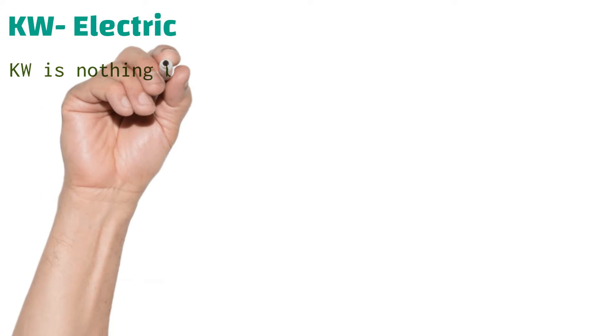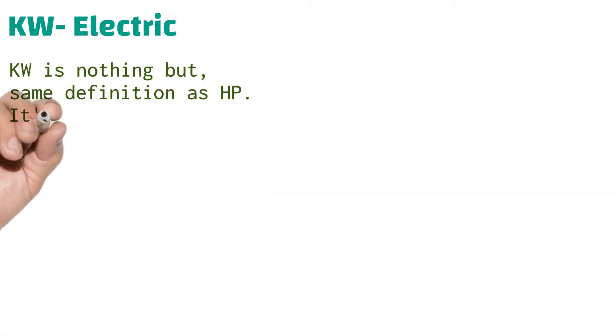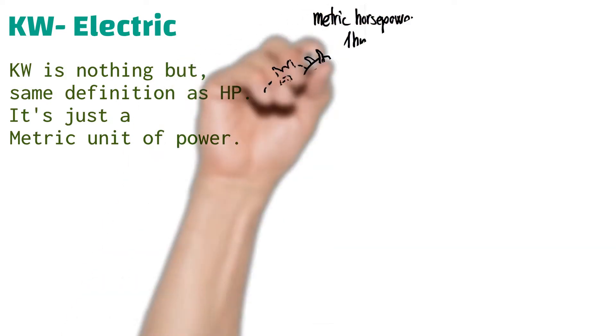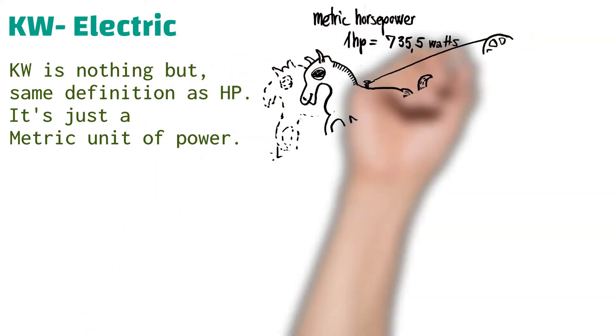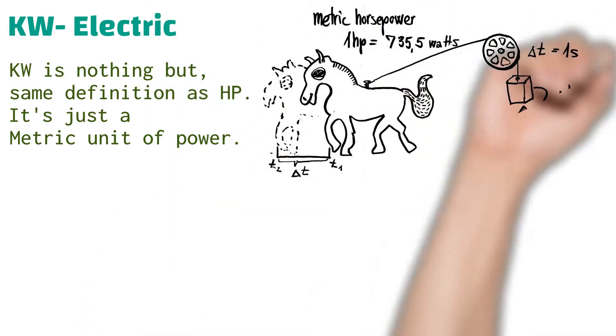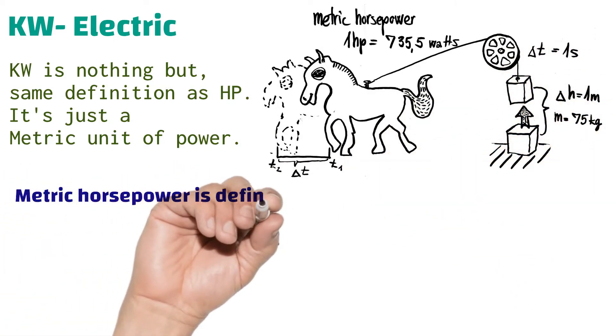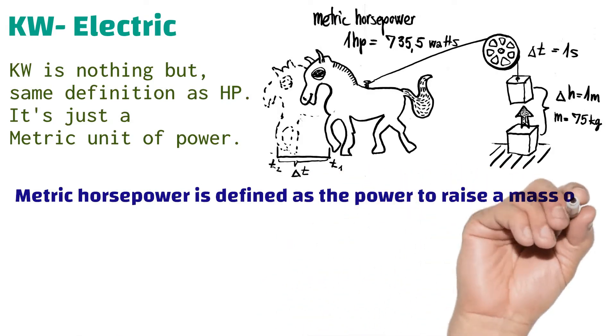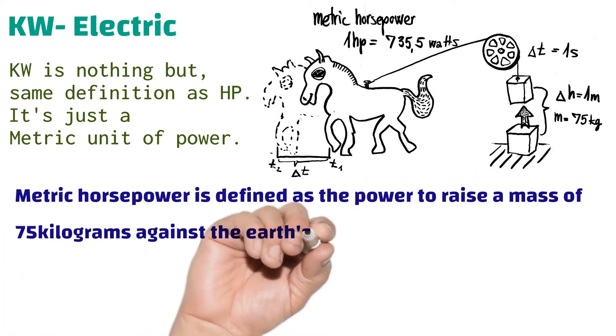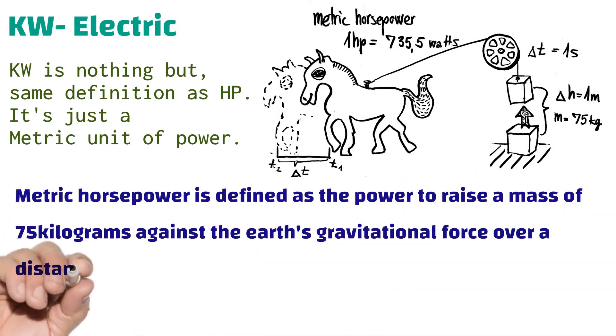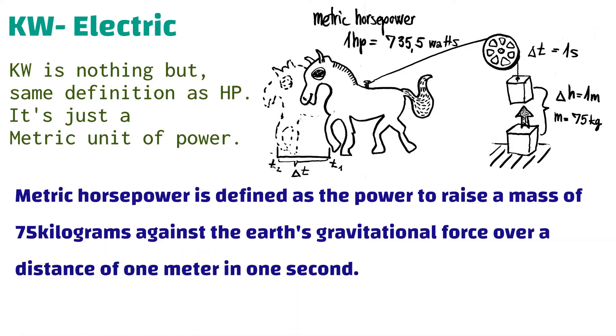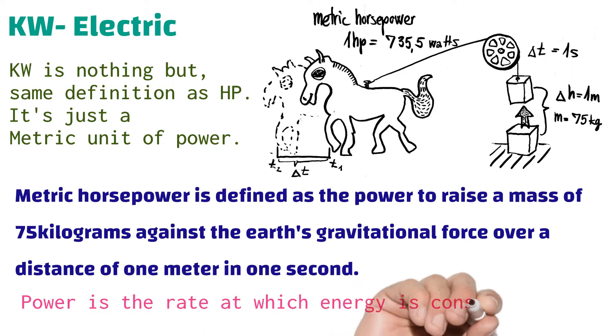What is kilowatts in electric? Kilowatts is nothing but same definition as horsepower. It's just a metric unit of power. Metric horsepower is defined as the power to raise a mass of 75 kilograms against the Earth's gravitational force over a distance of one meter in one second. Power is the rate at which energy is consumed by a load and is measured in watts.